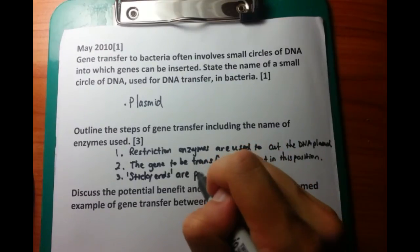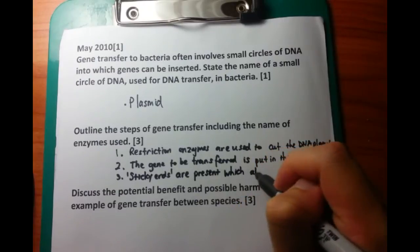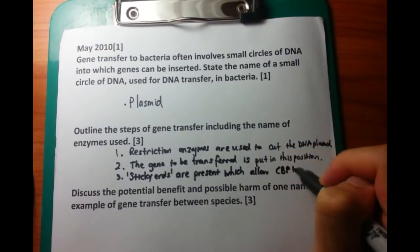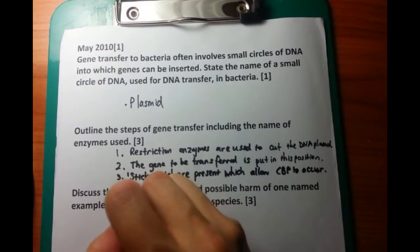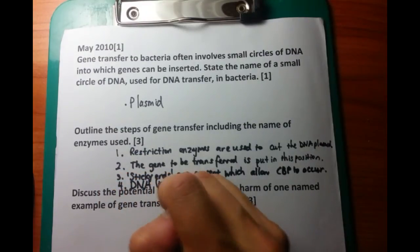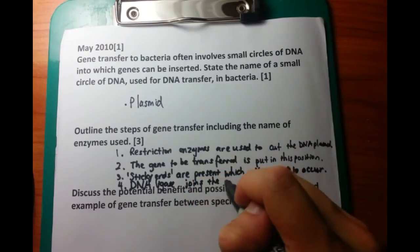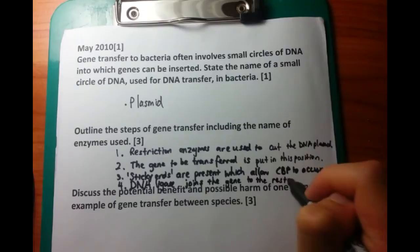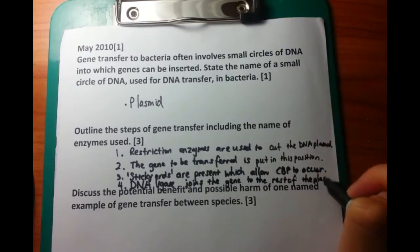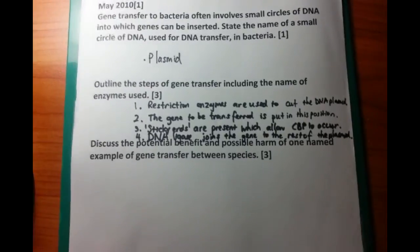Just because you have the gene in there doesn't mean that it's stuck within the plasmid itself — you need extra enzymes to stick those genes in. That's where the fourth step comes in: DNA ligase. This is the enzyme which causes the sticky ends to be joined down within the plasmid itself, joining the gene to the rest of the plasmid.